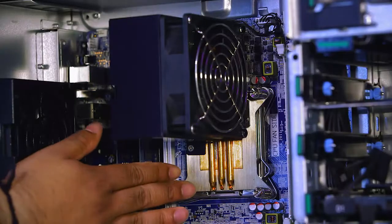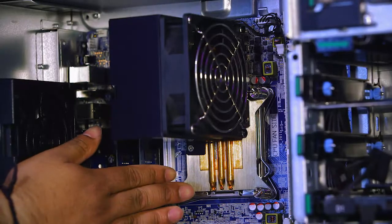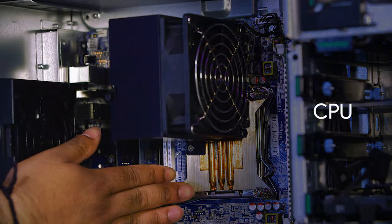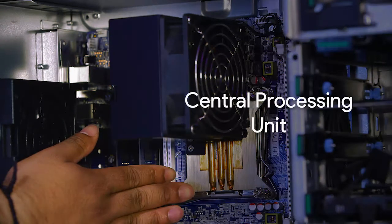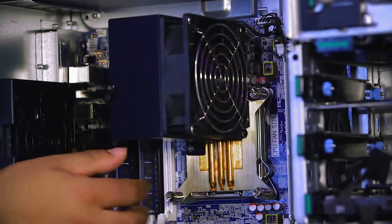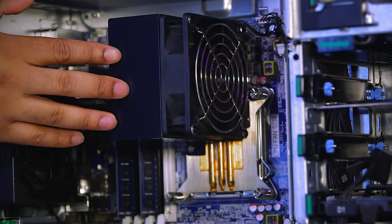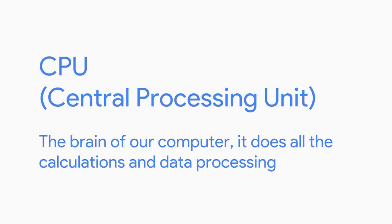Right here, this component is a CPU, or central processing unit, which is covered by this heatsink. You can think of the CPU as the brain of our computer. The CPU does all the calculations and data processing.